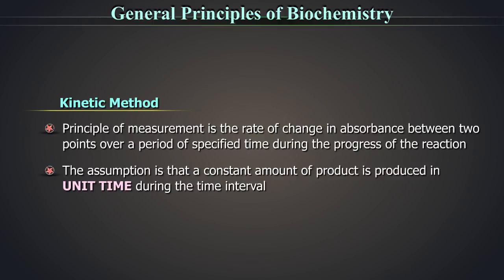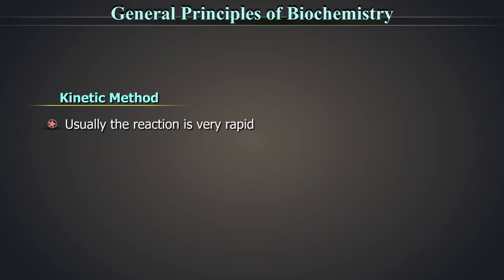The assumption is that a constant amount of product is produced in unit time during the time interval. This is also rate chemistry but the principle depends on the progressive reaction. Usually, the reaction is very rapid and thus, reaction time is short to avoid any danger of enzyme degradation. These tests are performed with a pre-incubation phase, usually done inside the equipment as programmed into it, during which any substances in the sample which might interfere with the test would have fully reacted with the reagent system.